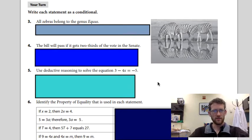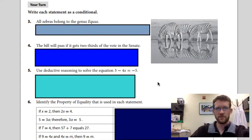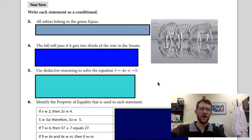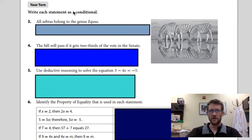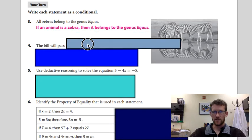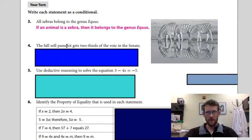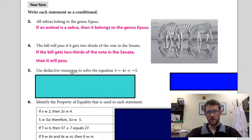Okay, I'm going to do another pause here. See if you can come up with something. All zebras belong to the genus equus. So we need to write this as a conditional statement. Conditional statements have the if-then format. So if what, then what? This one's a little vague. It basically says if an animal is a zebra, then it's in the genus equus, right? The bill will pass if it gets two-thirds of the vote in the senate. So therefore, if a bill will get two-thirds of the vote in the senate, then it will pass. And then this one, use deductive reasoning to solve. Again, we just want to show our steps here.